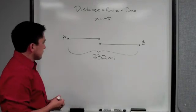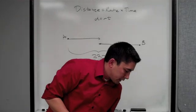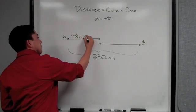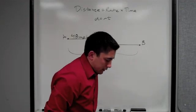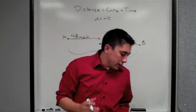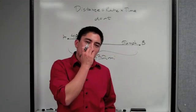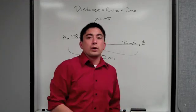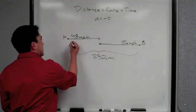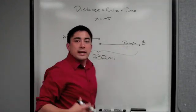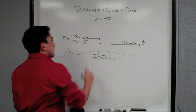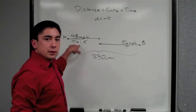First it says that the first train is going at 48 miles per hour, and the other one is going at 56 miles per hour. Now the one going at 48 left an hour and a half before train B. So this one took off first, so it had an hour and a half or 1.5 head start. So we put T plus 1.5.